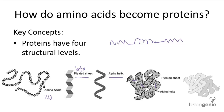The final level of structure, quaternary protein structure, occurs when a protein is a combination of multiple polypeptide chains. The polypeptides interact with each other to form a single functional protein complex. An example of a complex protein unit would be hemoglobin, a protein found in the blood that carries oxygen. Hemoglobin is made of four polypeptide subunits, and these subunits, when bonded to each other, can communicate to work cooperatively and carry out their jobs more efficiently.